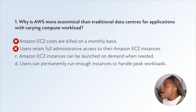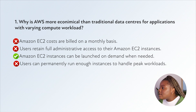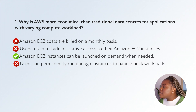Option C is exactly right because the question tells us there are varying compute workloads. In a traditional data center you might have had to provision compute capacity for your maximum loads, but with AWS you can deploy compute capacity for only what you need at that point in time. Option D — permanently running enough instances to handle peak workloads — is not ideal. The key idea is we only run what we use, so C is the right answer.